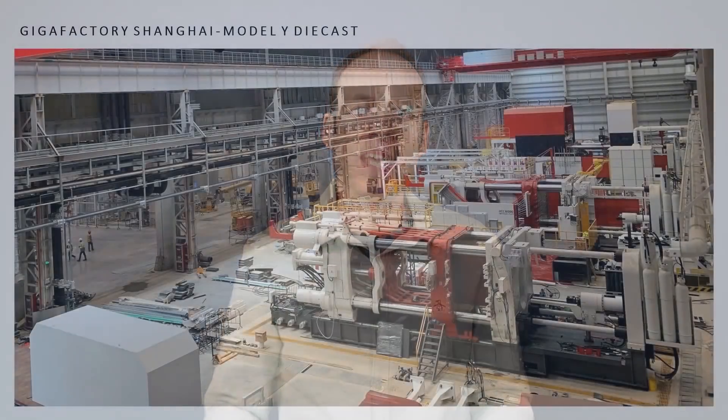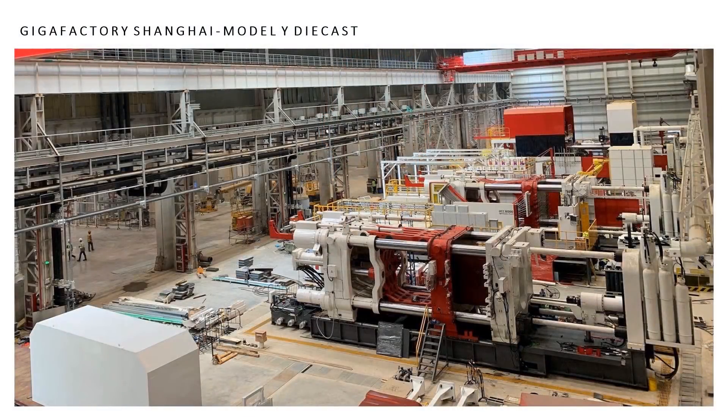Another piece of data that really helps support the fact that Tesla is going to begin Shanghai production with a front and rear casting and structural battery pack is just the sheer size of the die cast machine at Gigafactory Shanghai.